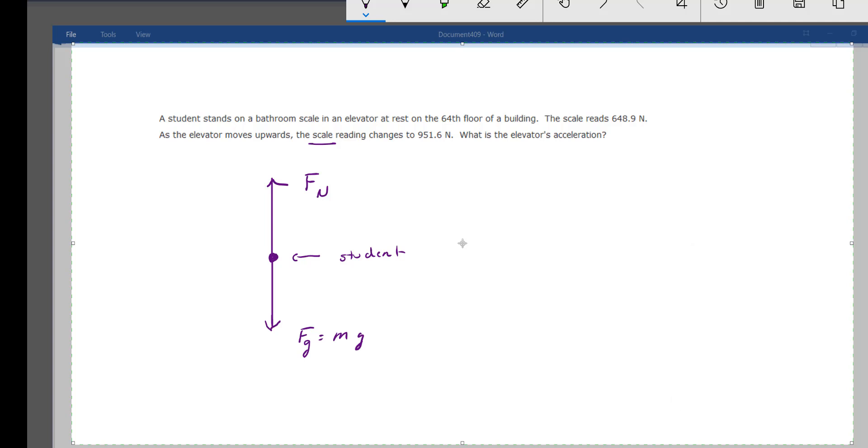Well, the at rest information tells us that the net force is zero at that point. The acceleration is zero. And so the scale has to be equal and opposite to the force of gravity. So that at rest information gives us the force of gravity of negative 648.9 newtons. Now, we're really concerned about when the scale is moving. So we're going to have that normal force of what it reads while moving or while accelerating. And that's at 951.6 newtons while the elevator is accelerating, which is what we're interested in.